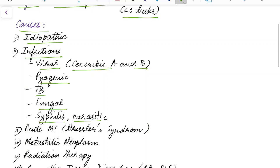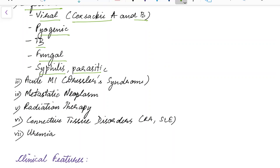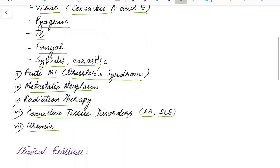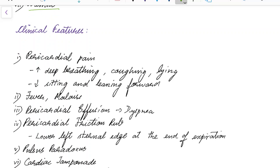Acute pericarditis can occur after acute myocardial infarction. In this case it is known as Dressler syndrome. Acute pericarditis can occur after metastatic neoplasm, due to radiation therapy, or due to autoimmune connective tissue disorders like rheumatoid arthritis and systemic lupus erythematosus. Uremia can also lead to acute pericarditis.